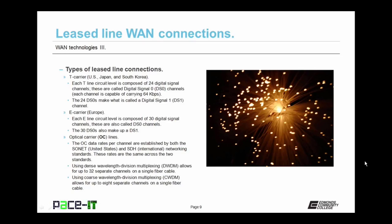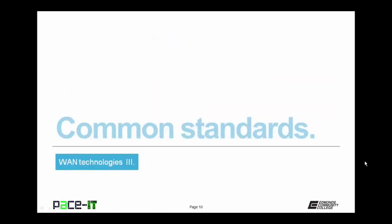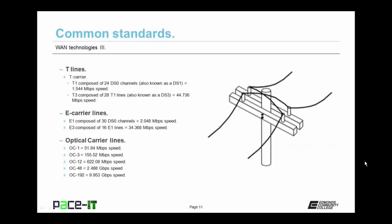Let's conclude with common standards. Beginning with T lines: a T1 is composed of 24 DSO channels — also known as a DS1 — and is capable of achieving speeds of up to 1.544 megabits per second. A T3 line is composed of 28 T1 lines — also known as a DS3 — and can achieve speeds of up to 44.736 megabits per second. In Europe, an E1 line composed of 30 DSO channels can achieve speeds of up to 2.048 megabits per second. An E3 line composed of 16 E1 lines gives you up to 34.368 megabits per second. While a T1 is slower than an E1, a T3 is faster than an E3.